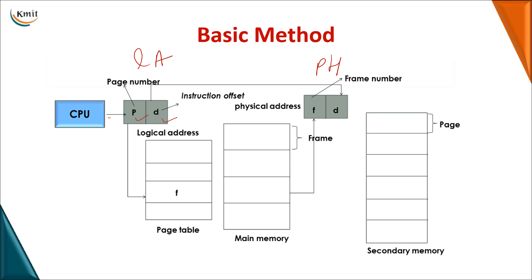Using the page number, we determine where the pages are stored in frames. The page number is an input to the page table — a data structure — and the frame number is the output. So page number p goes in, frame number f comes out. That frame number f combined with the displacement d forms the physical address, and you can then retrieve the data from main memory. The data from main memory is accessed as frame number plus displacement.